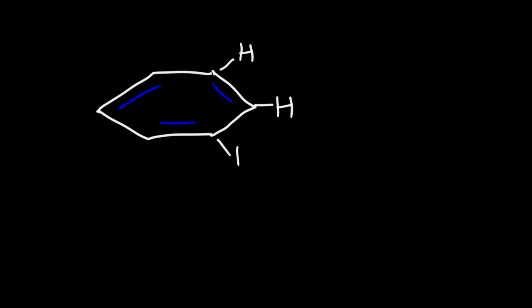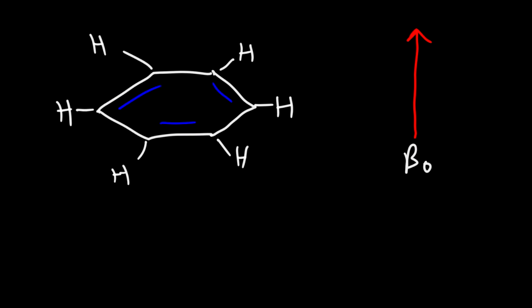Let's consider benzene first. Benzene has three pi bonds, which is six pi electrons, and it has six hydrogen atoms. We are going to apply an external magnetic field to this molecule, and we're going to call it B-naught. When you apply a magnetic field, any charged particles that are moving will begin to move in a circular path. The pi electrons are free to move in the benzene ring, so they're going to be circling around that benzene ring.